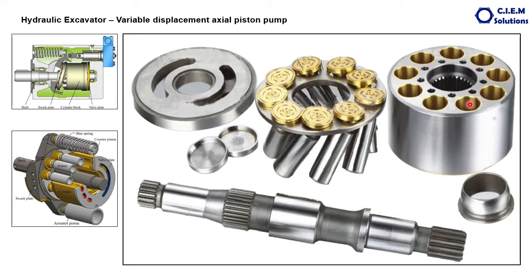The barrel or cylinder housing rests over the space plate, and the other end has a component called the port plate or valve plate. One portion acts as the inlet port and the other portion acts as the exhaust port. The port plate or valve plate always faces the cylinder block.